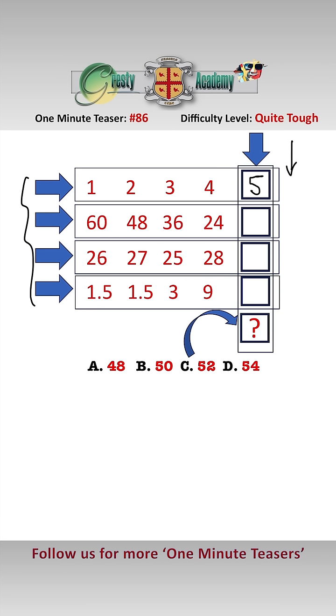Second sequence: 60, 48, 36, 24. We're taking 12 off each time, so that is 12.